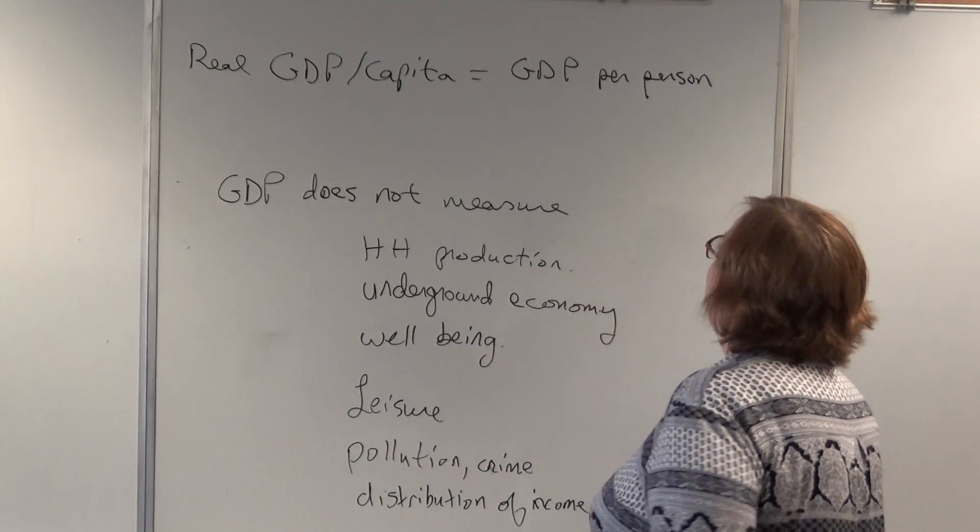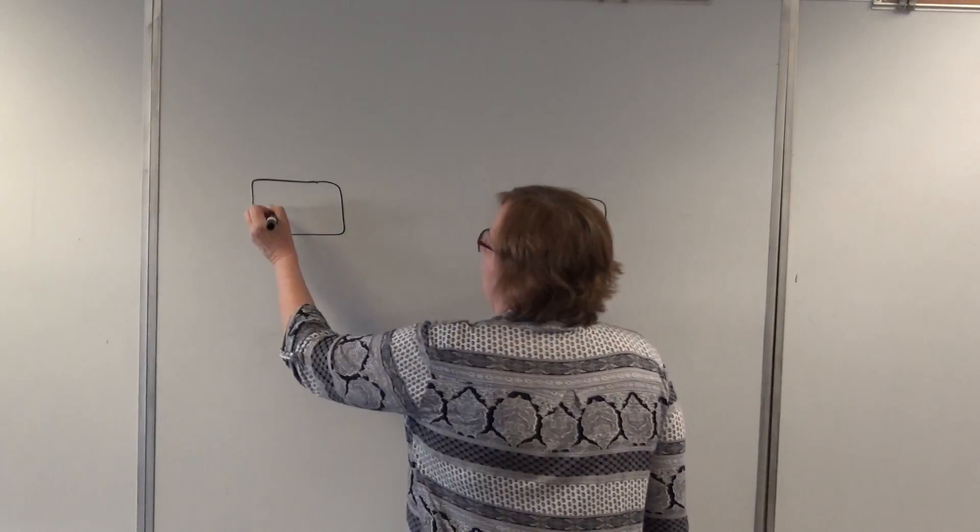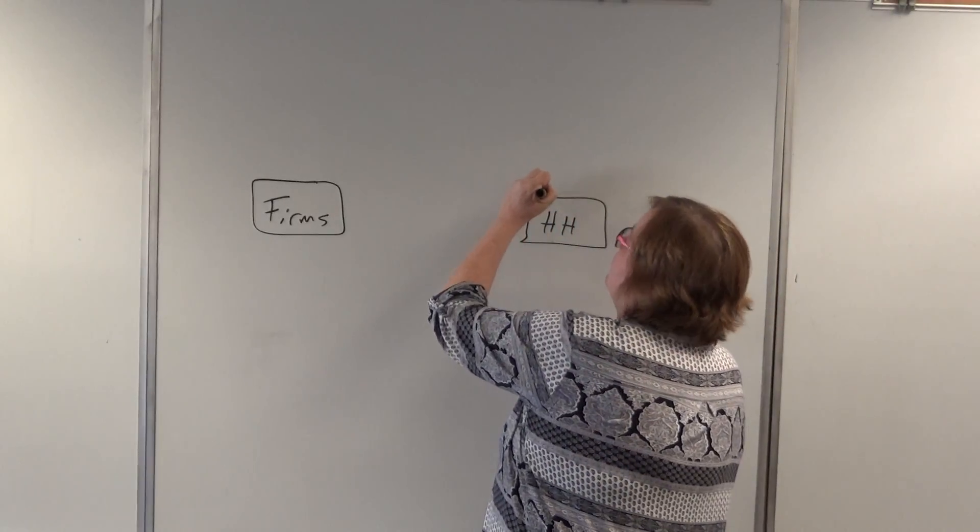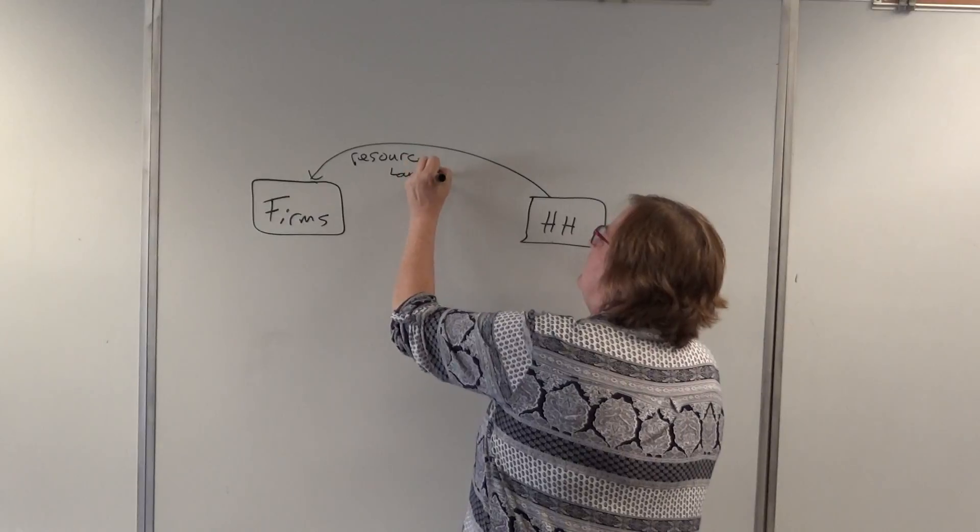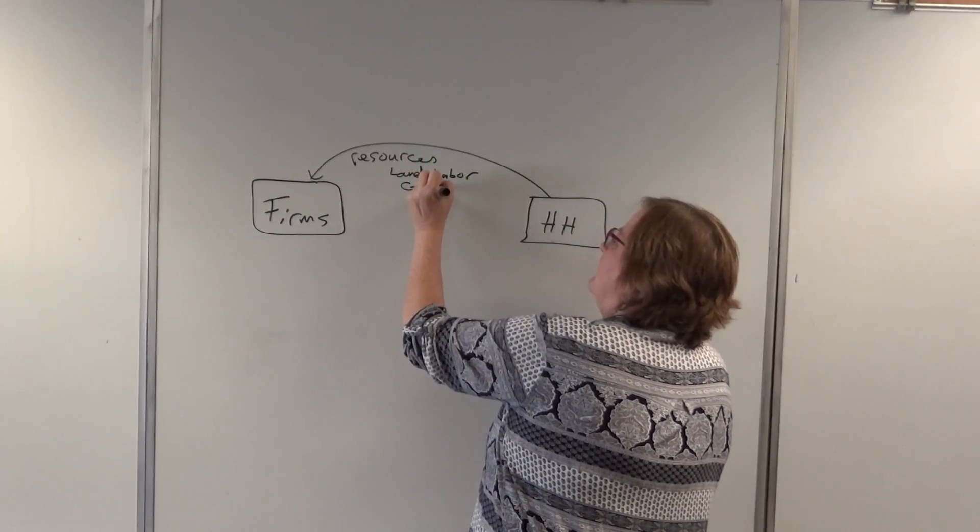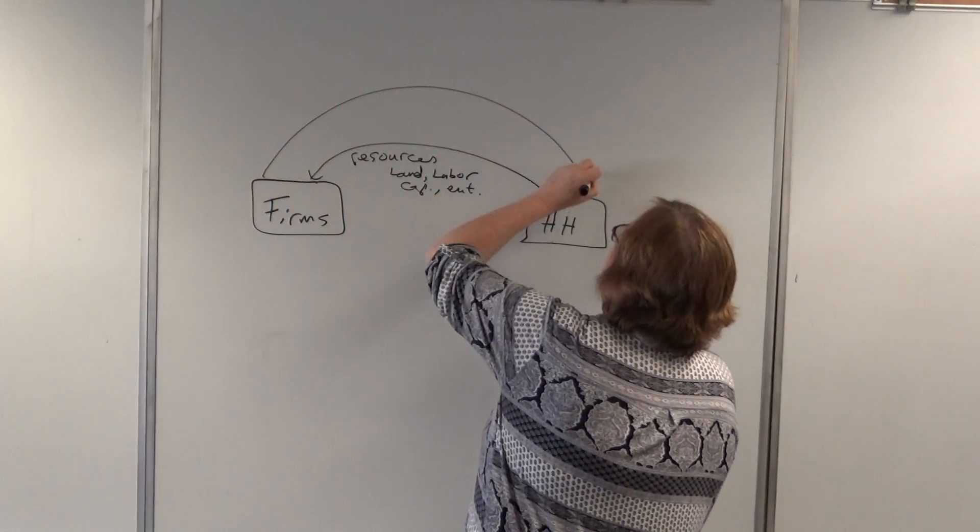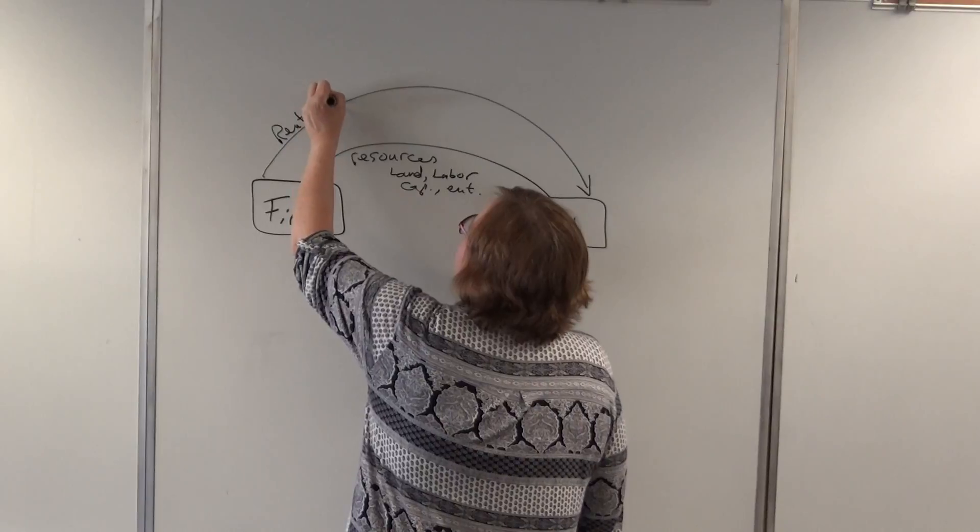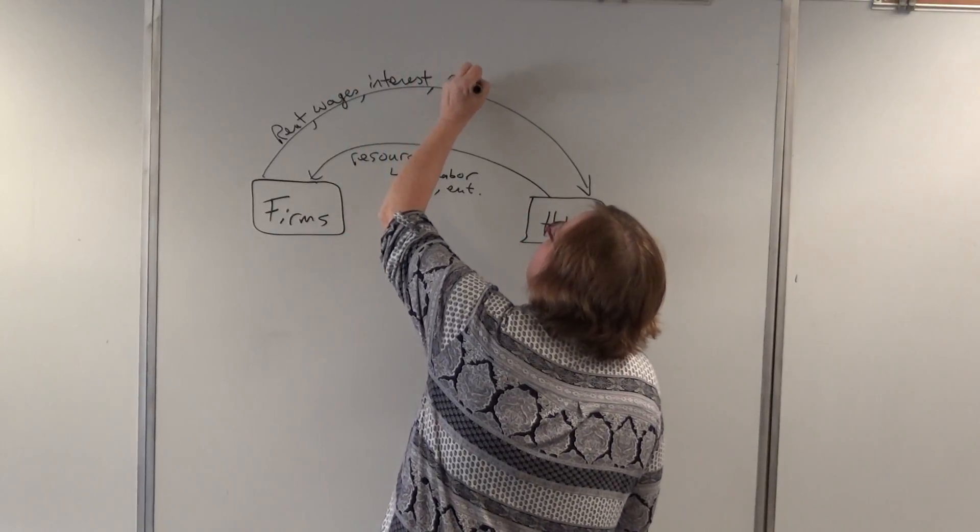Okay. So, now, let's look at what it measures and how it's measured by going back to the circular flow. So, we had firms. Do you remember that? And we had households. And the households sent their money, excuse me, sent their resources. Do you remember that? Resources. Land, labor, capital, and enterprise, right? Okay. And then, the firm sent back the rewards. And that was, for land, it was rent. Labor, it was wages. Capital was interest. And enterprise was profit.